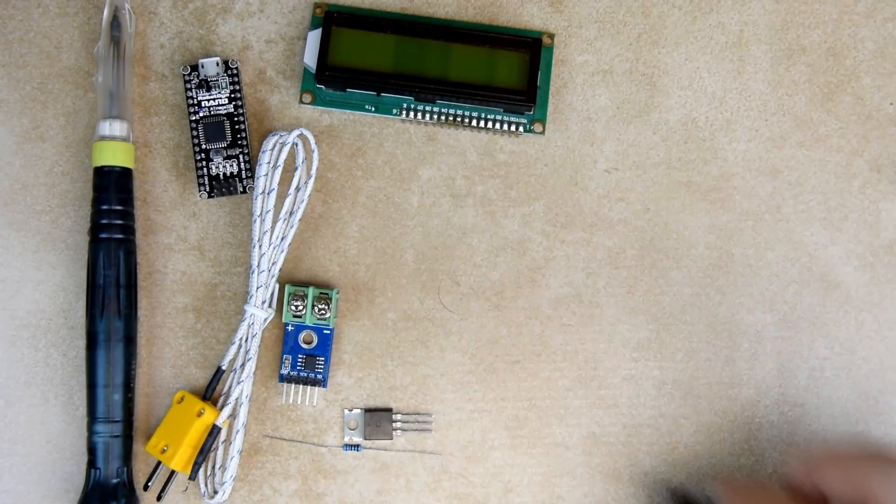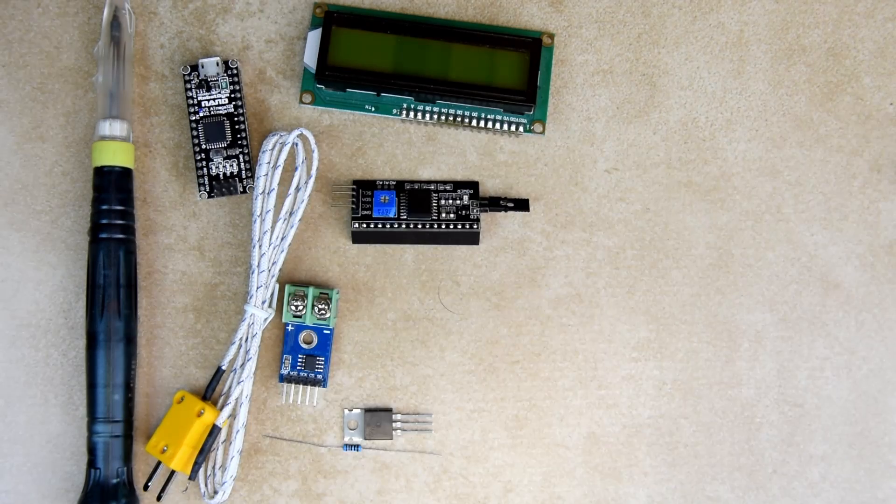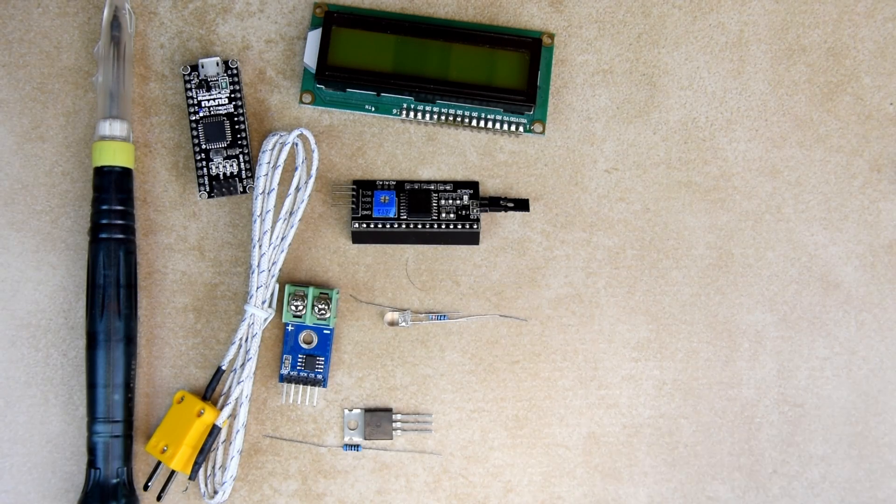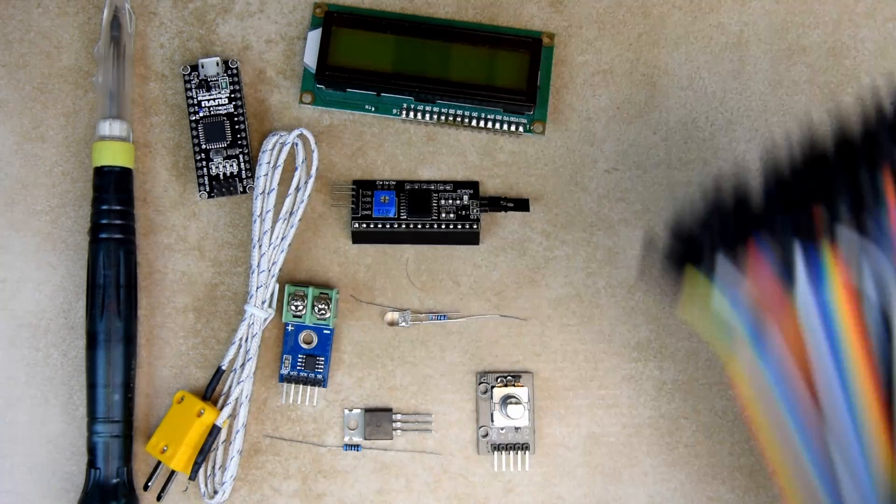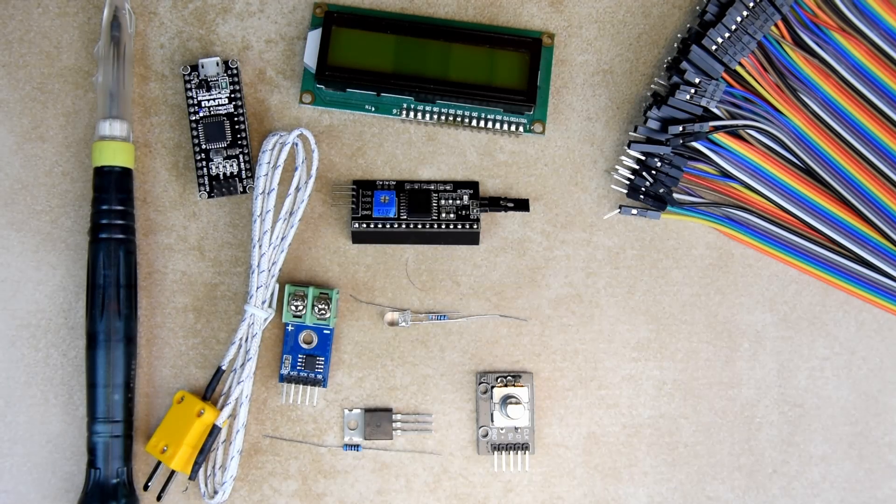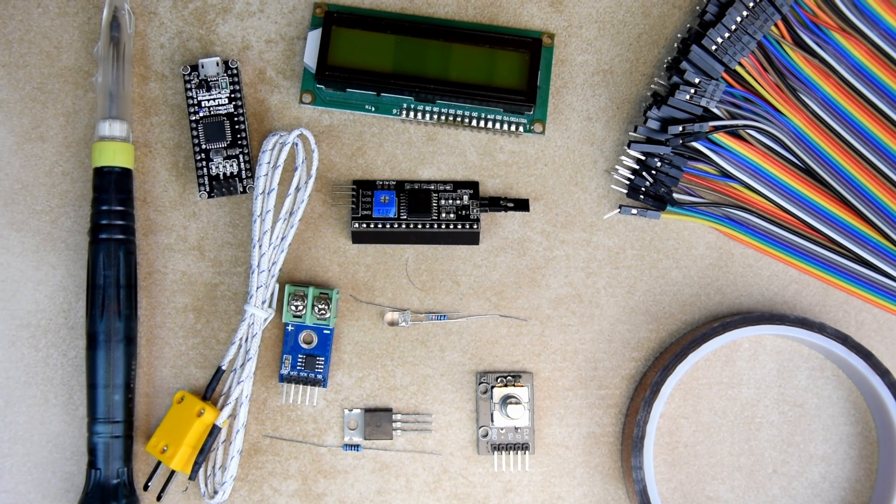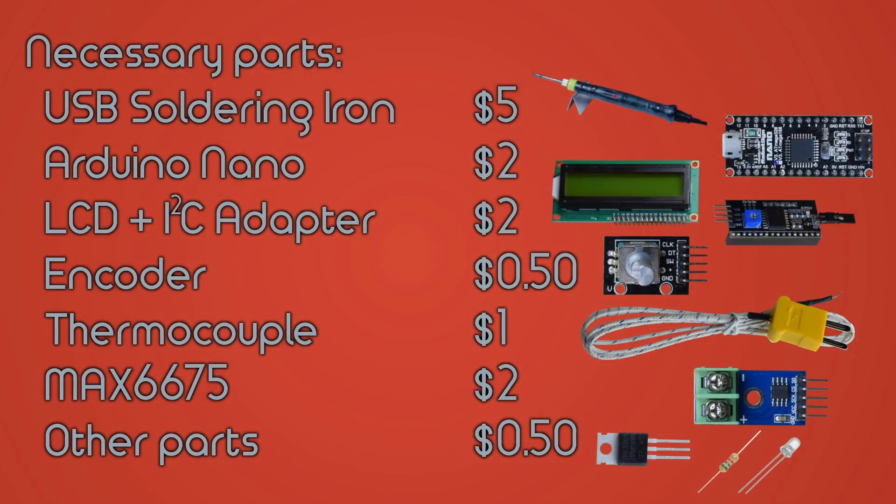A 16 by 2 LCD with the I2C adapter, one LED with a resistor, the KY040 rotary encoder. We will also need some wire and Kapton tape. All of those can be purchased from your favorite Chinese marketplace for less than 15 dollars total. On-screen are prices from Aliexpress. The links to all of those products can be found in the video description.